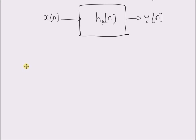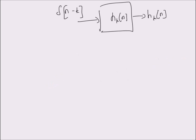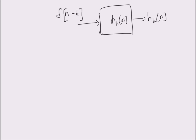Here h_k(n) is the impulse response, which is basically defined as when you give an input delta(n minus k) — a displaced or shifted version of the unit sample or unit impulse — to a system. Then the output is the same as h_k(n). So when the input is a unit impulse, the output is the impulse response h_k(n). Now let us look at an example illustrating how to use the impulse response to compute the output of the linear system.